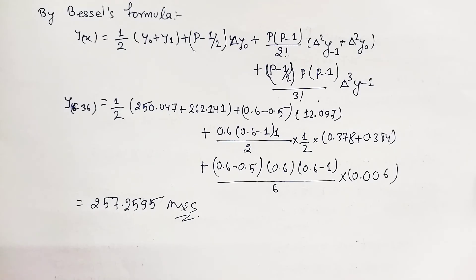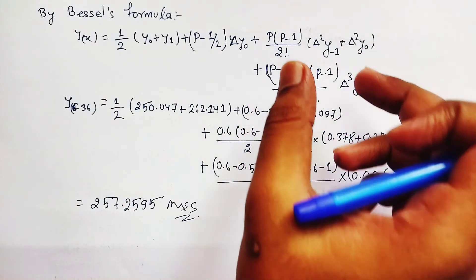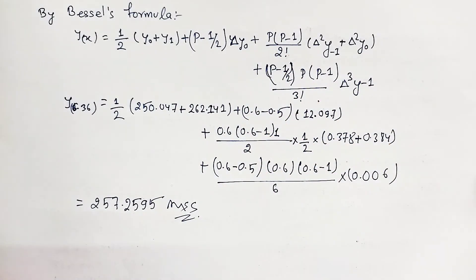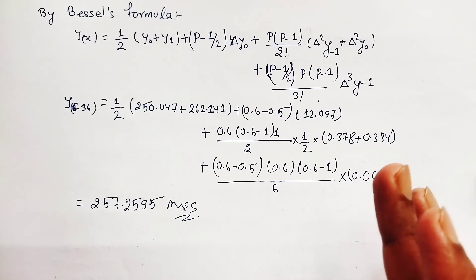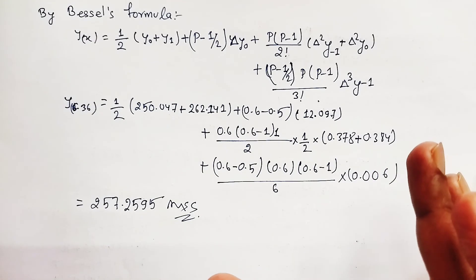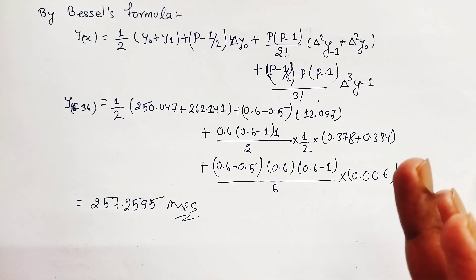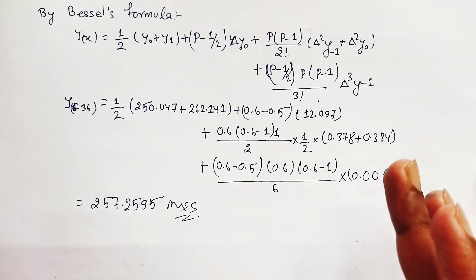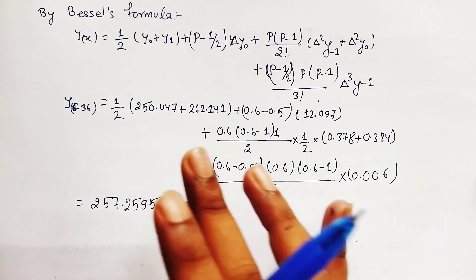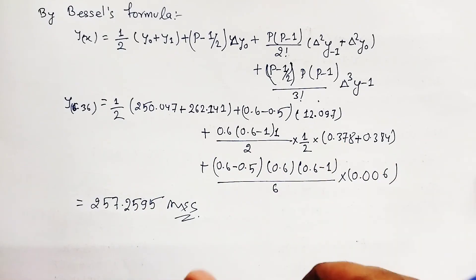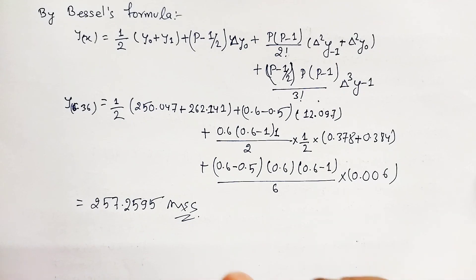So the cube of 6.36 is 257.2595 — that is our final answer. I apologize for the mistake where I missed a term in the formula earlier. If you are enjoying the content on Civil Learning Online, please subscribe to the channel and share this video with your friends. See you in the next video — till then, stay safe and take care of yourself.